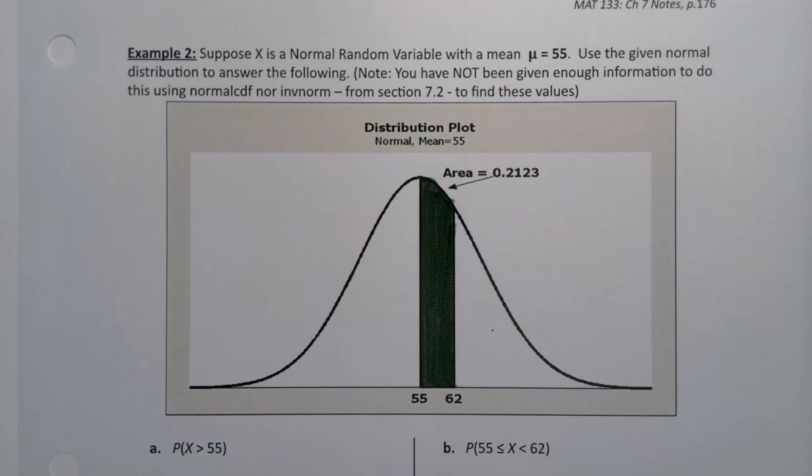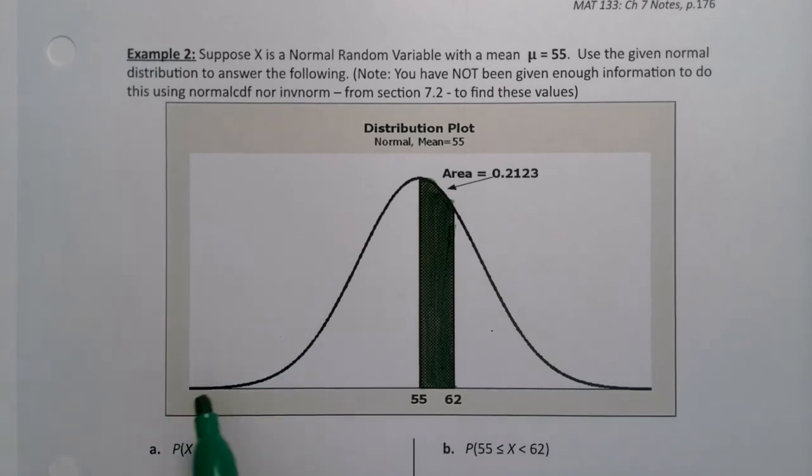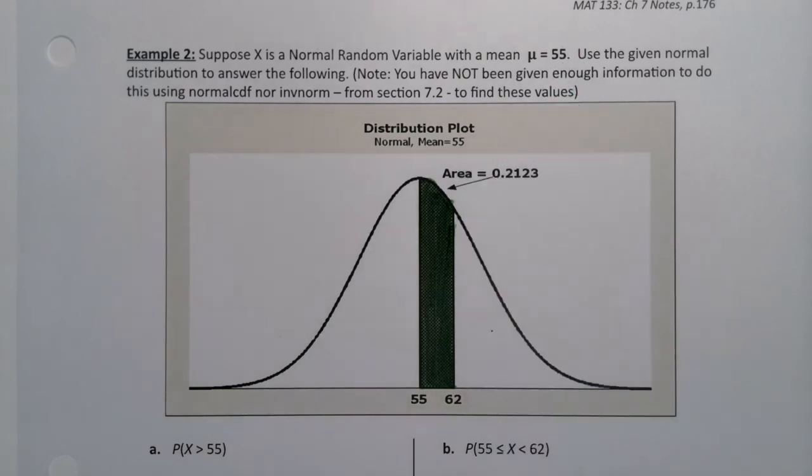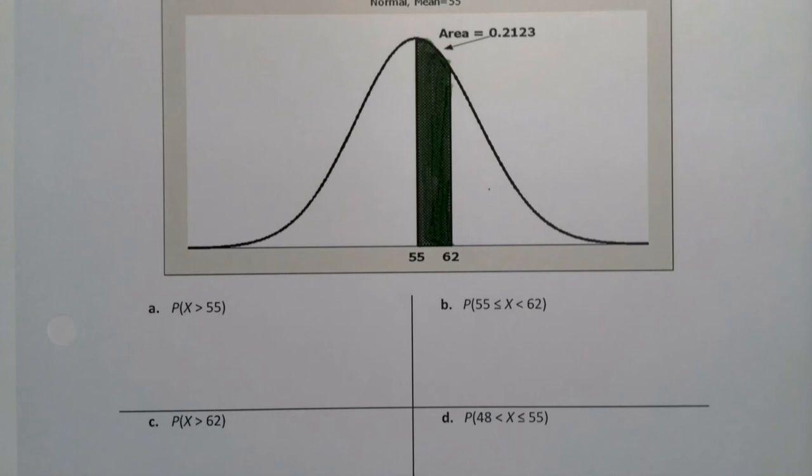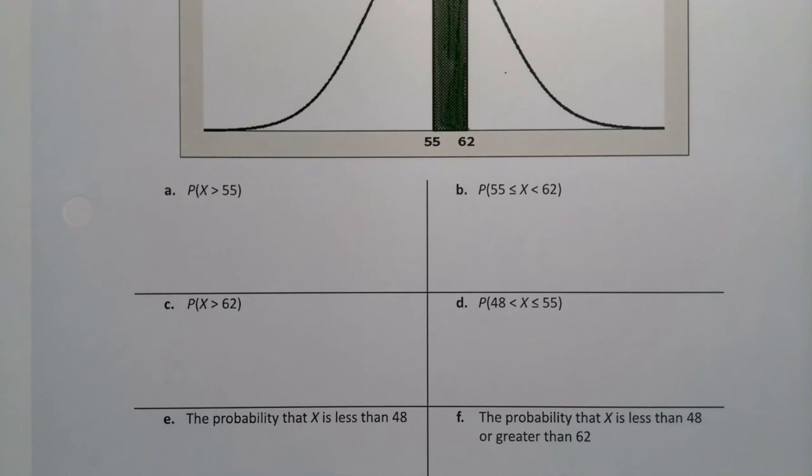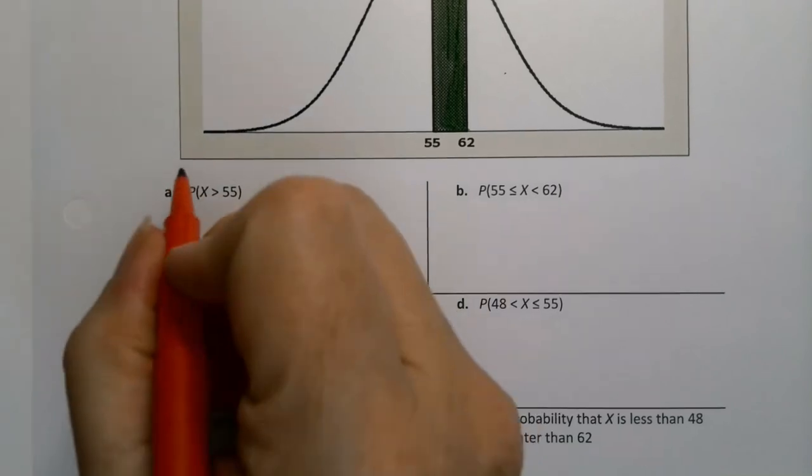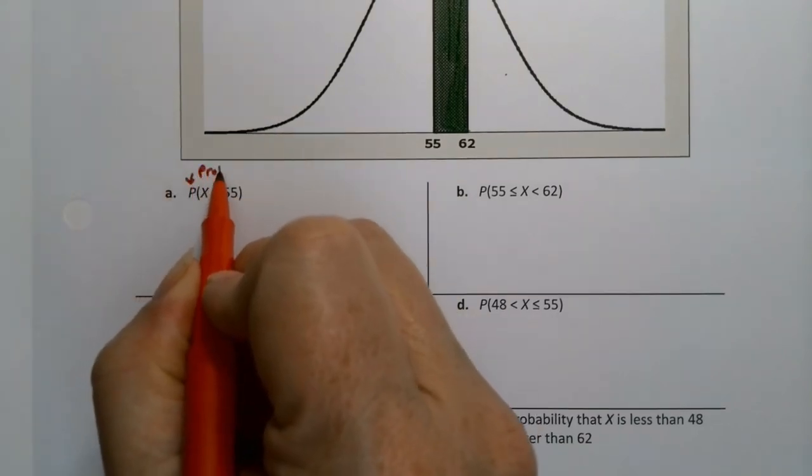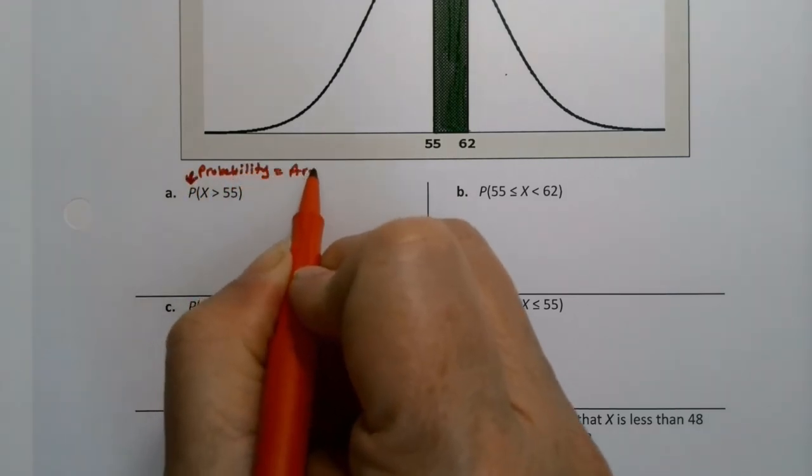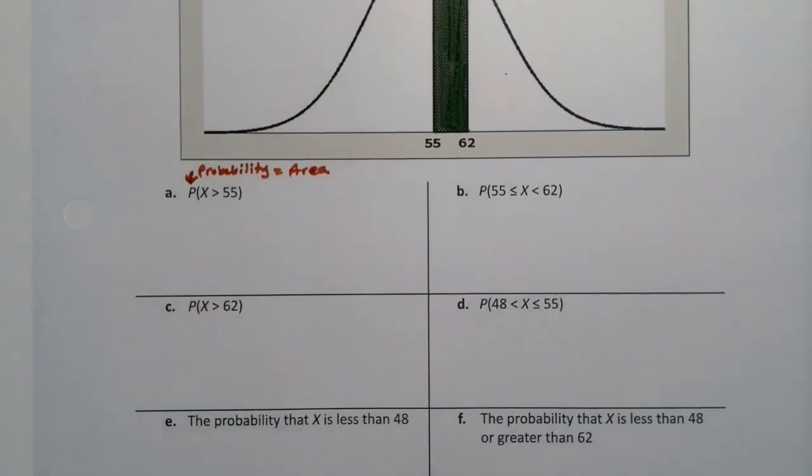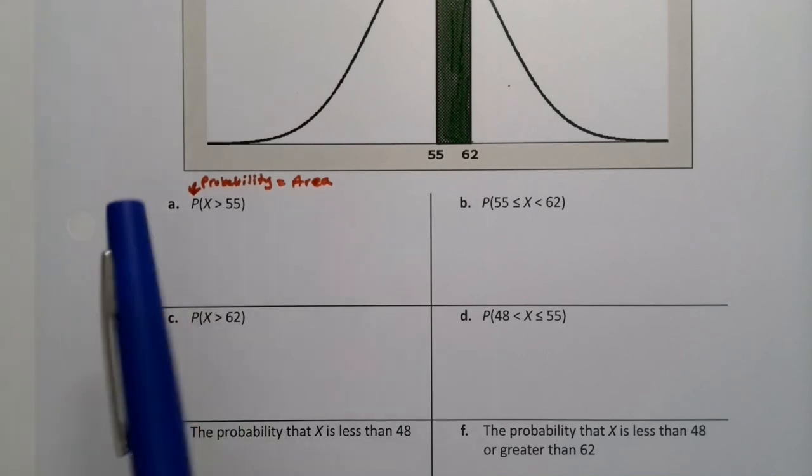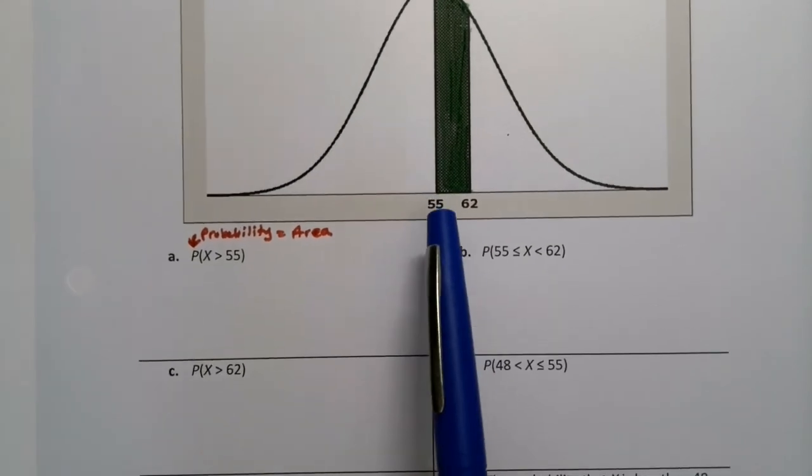So this normal curve that's drawn here has a mean of 55. It says it right there, so that center line is at 55. And we're asked a whole bunch of questions. Now remember, capital P like that means probability. So we're being asked to find the probability, and probability is area. They're one and the same for this normal curve.